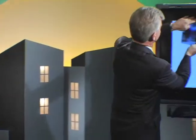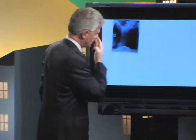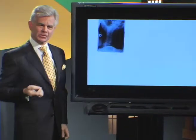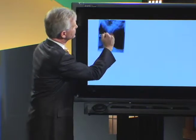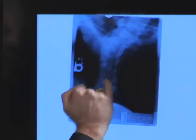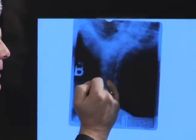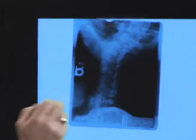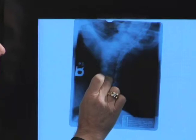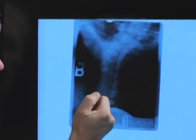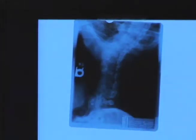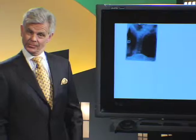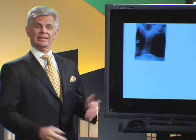The doctor would take the x-ray and they'd invite you over to the light table and they'd go: Mr. and Mrs. Seller, look right here. The pain in your neck — you see these two vertebrae coming really close together? What they're doing is putting pressure on your nerve and that's radiating down to your shoulder.